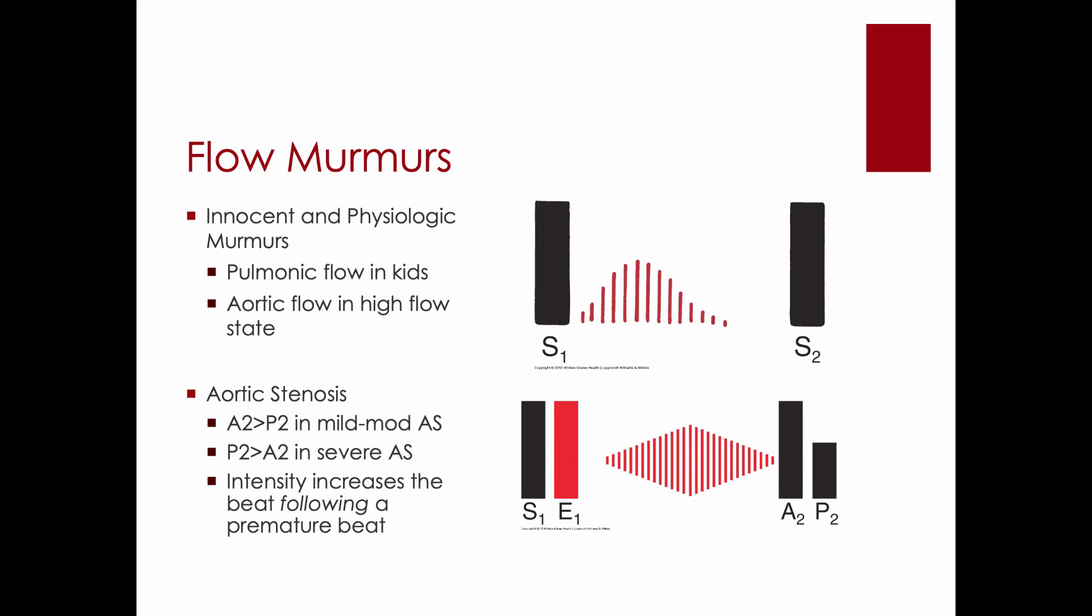That beat after the premature beat will be louder in aortic stenosis than in mitral regurgitation. So here's the way it'll sound. If you have aortic stenosis with a premature beat, it'll sound like this.